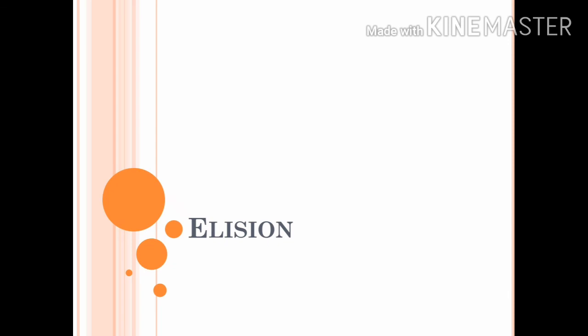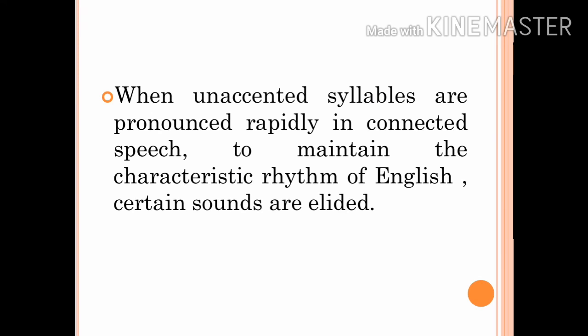Next, we move on to elision. When the unaccented syllables are pronounced rapidly in connected speech in order to maintain the characteristic rhythm of English, certain sounds are elided. This is called elision.